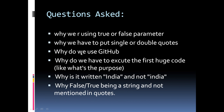Why do we have to put single or double quotes for parameter values? Why do we use GitHub repositories? Next question: why do we have to execute the first huge code — what is the purpose of Activity 1? Another question: why is it written 'India' with a capital I and not otherwise? Last question: why is false or true being a string and not mentioned in quotes — since true or false is a string, why has it not been placed inside quotes rather than simply typing true or false?